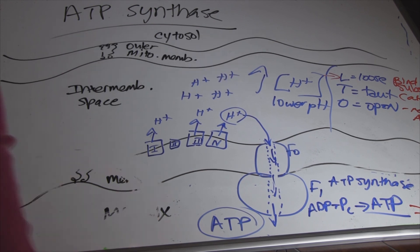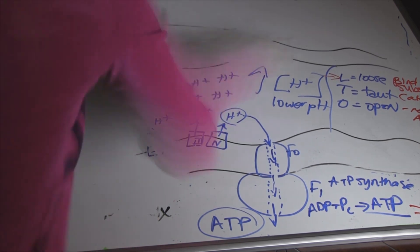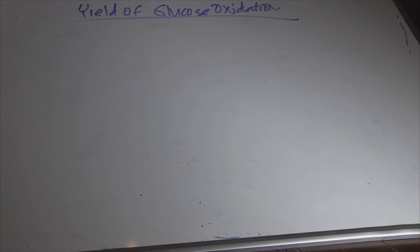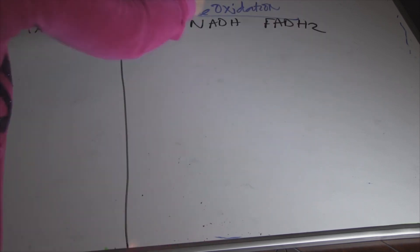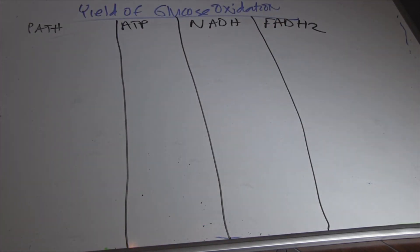Let's sum up some stuff about what happens. Let's go over the yield. Like what energy do we get from glucose oxidation? And let's make a handy little chart. So here we have the pathway ATP, NADH, and FADH2. So let me write the pathway in red.